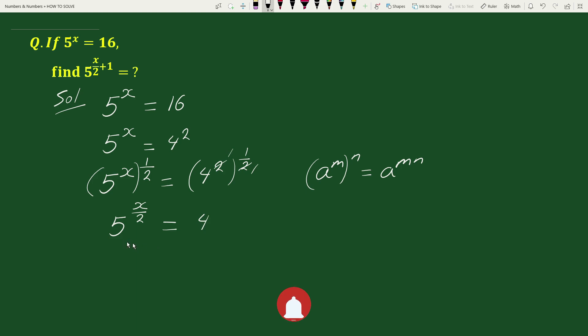Now multiplying both sides by 5, we can write this equation as 5 to the power x by 2 times 5 equals 4 times 5. We can write this 5 as 5 to the power 1.